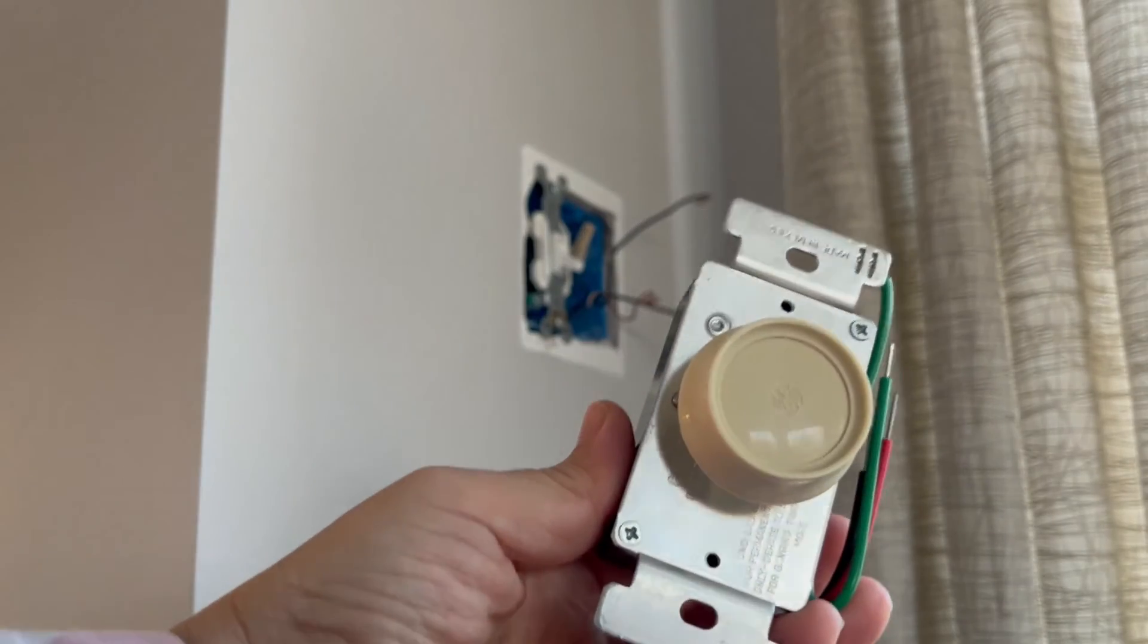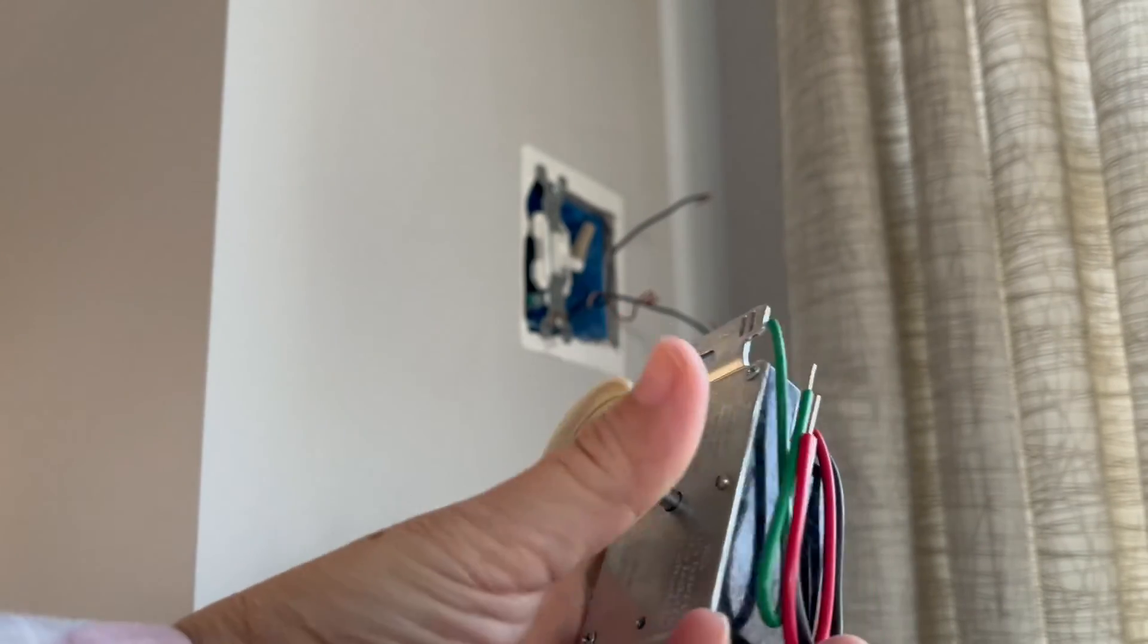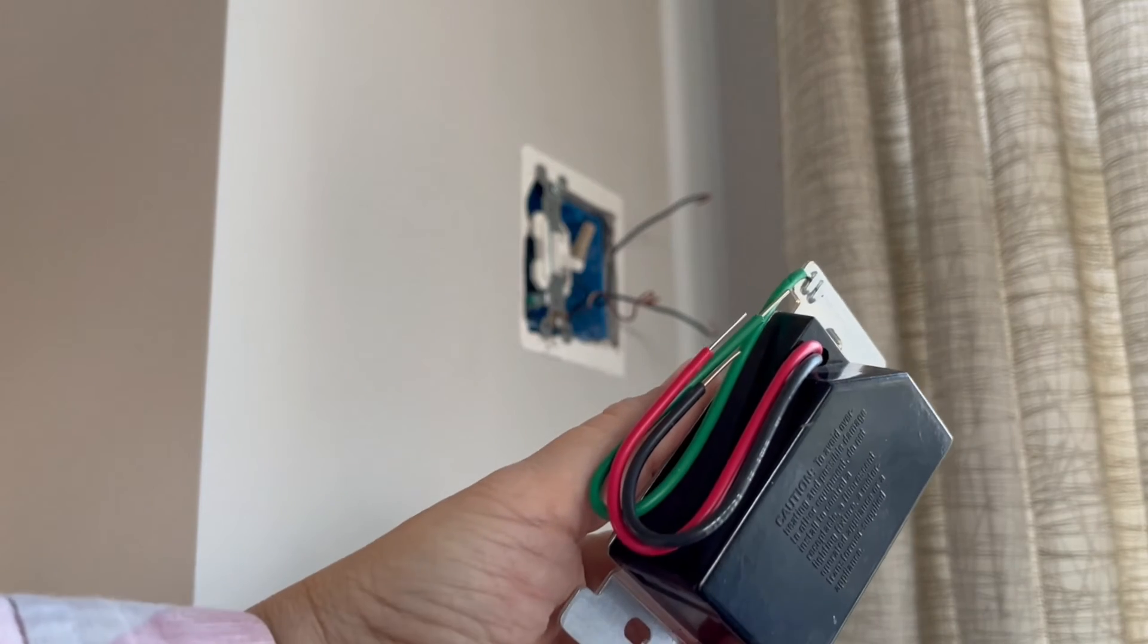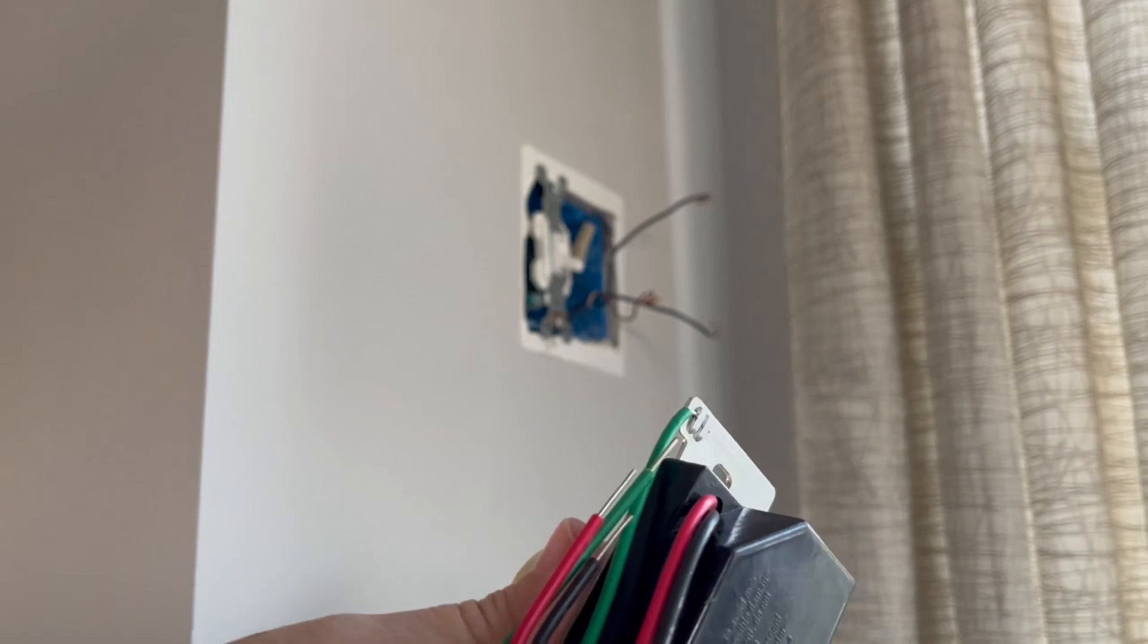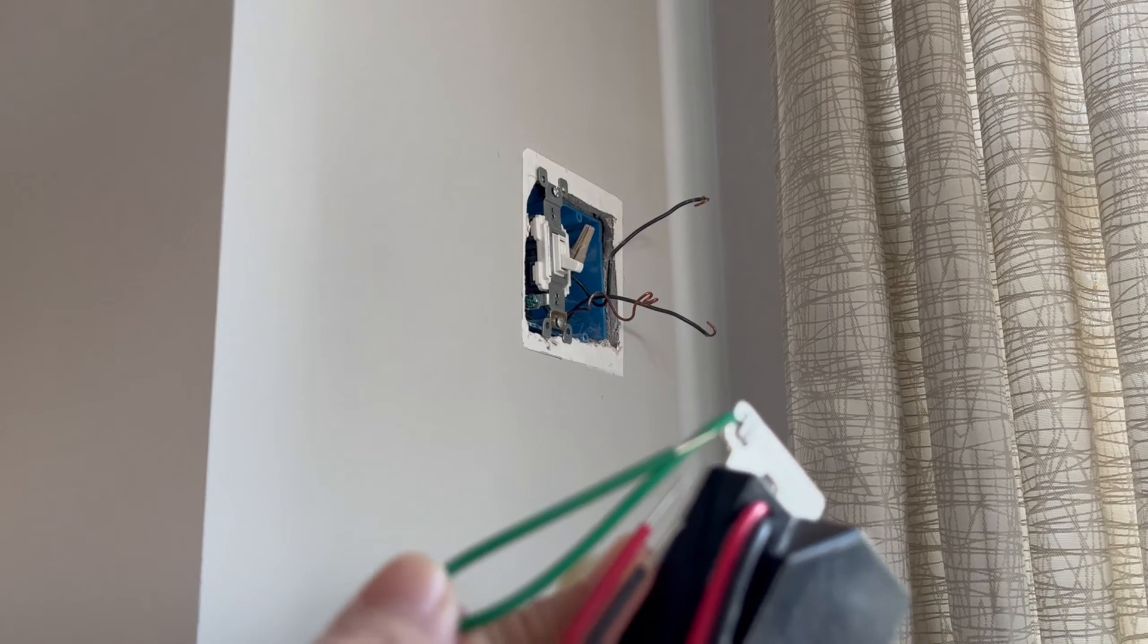So here is my single pole dimmer. The green wire is the ground wire, and the red and black wires are the hot wires. I'll be connecting the green wire to the copper ground wire.